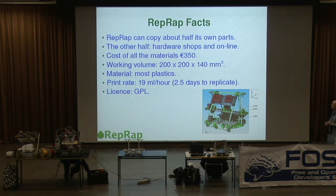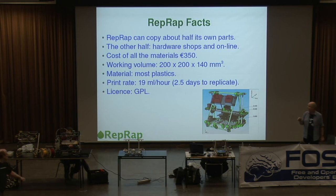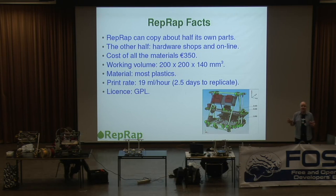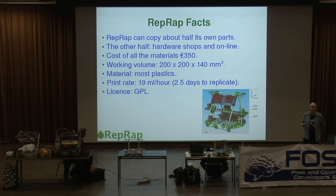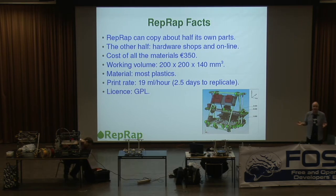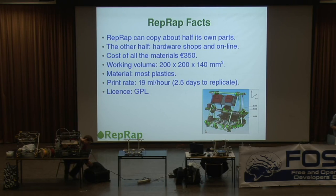A few facts about the machine. It can copy about half of its own parts — that is, if you don't count nuts and bolts. It's got lots of nuts and bolts in it, and if you count nuts and bolts and then look at the pie chart, the entire machine is made from nothing but nuts and bolts. So if you discount fastenings, it prints about half of its own parts. That's not really cheating, because it would be perfectly straightforward to have the machine print a series of little cylinders to use in place of nuts and bolts and glue the parts together — that would work fine, it would just mean you wouldn't be able to take the machine apart again, which from the point of view of maintenance is not such a clever idea.